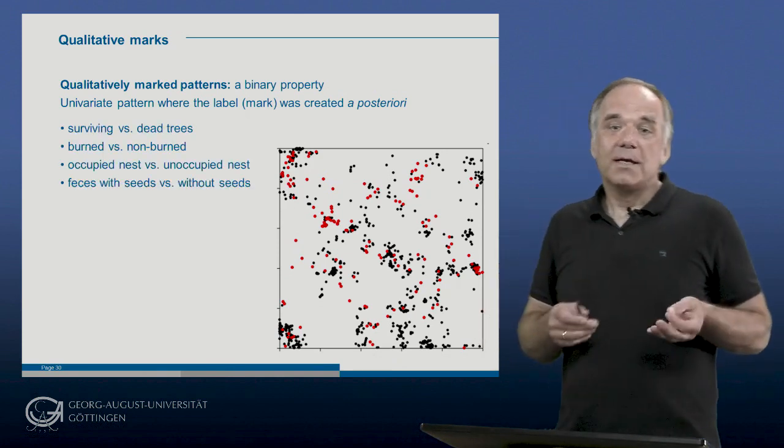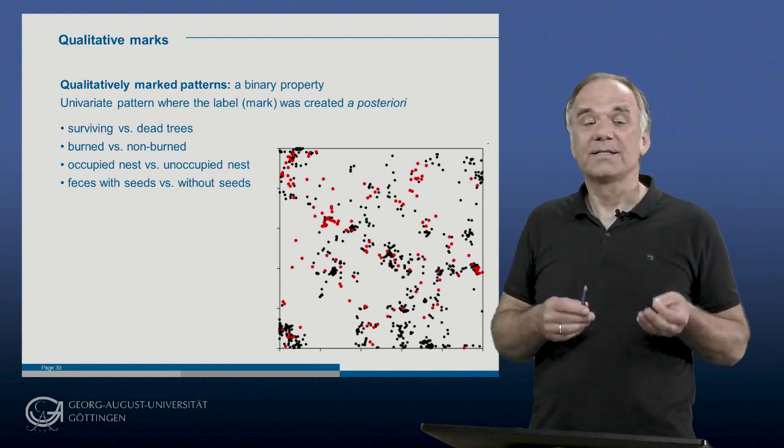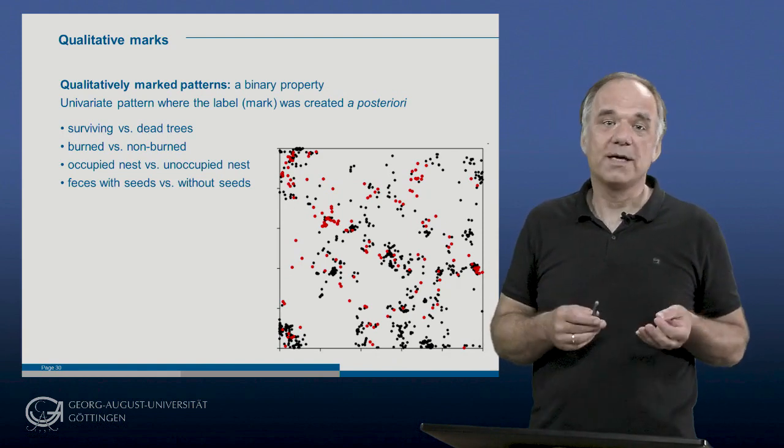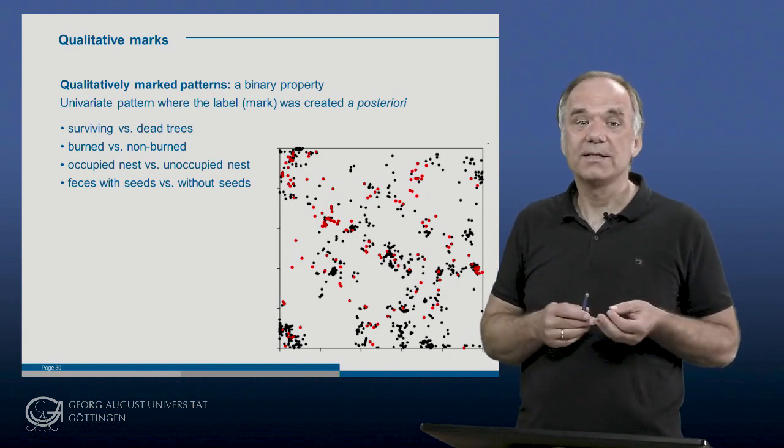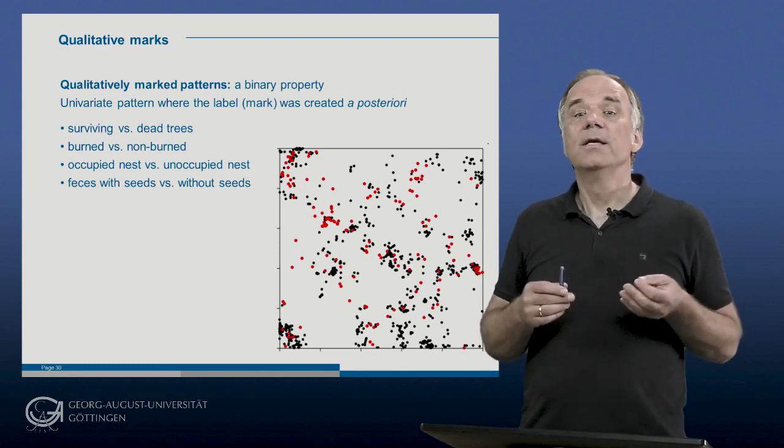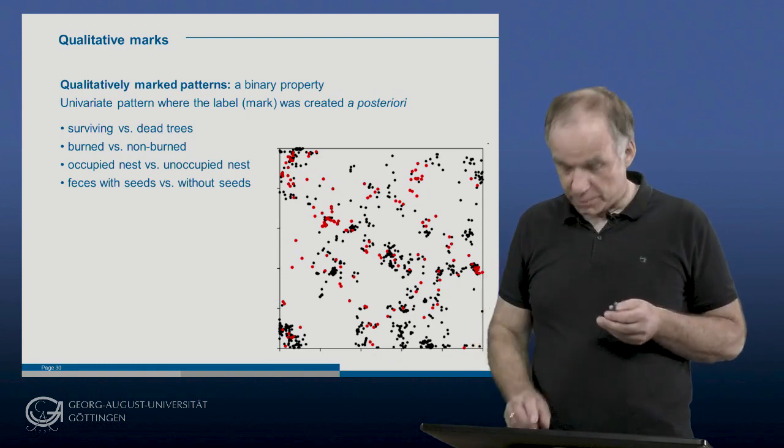A qualitatively marked pattern could represent, for example, surviving versus dead trees, burned versus non-burnt shrubs, occupied versus non-occupied nests, or animal droppings with seeds versus without seeds, as we will use later in our example.